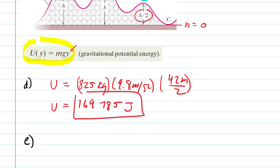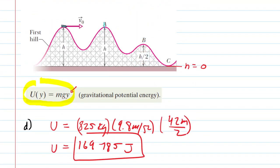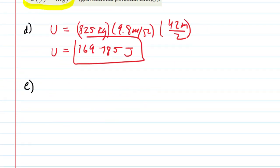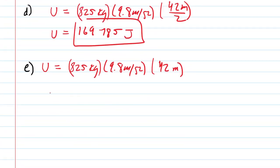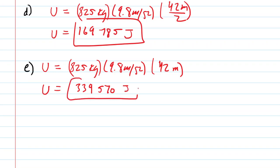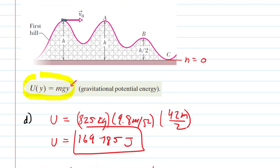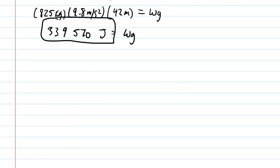In part E, we're calculating the gravitational potential energy at point A. You can see that the height above the ground level there is just H. Basically the same setup as part D, but plugging in H instead of H/2. We get 339,570 joules — that is the gravitational potential energy at point A in part E.